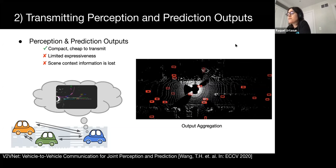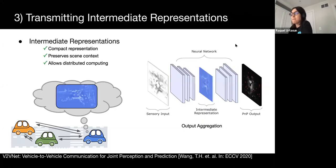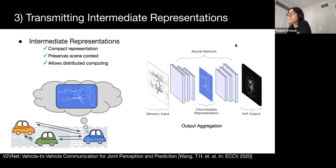However, only transmitting outputs discards context and active properties other than position and velocity that may be useful for PMP reasoning. To achieve the best balance of small message size and improved performance, we propose transmitting intermediate representations of the neural networks performing joint perception and prediction. The intermediate representations are typically compact and highly compressible, while still containing rich contextual information. Also, expressiveness is not limited in contrast to output representations. Moreover, using intermediate features leverages distributed computation from multiple vehicles, as each vehicle processes its own sensor data.